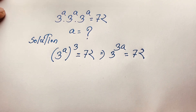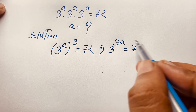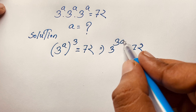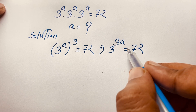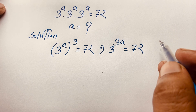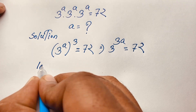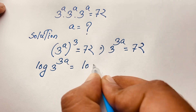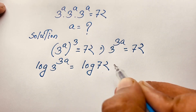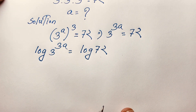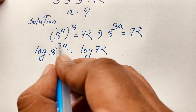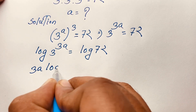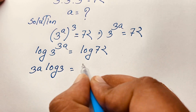Now, here we have 3 to the power 3a on one side, but 72 on the other. To find the value of a in this exponential expression, I apply natural log to both sides. So, natural log of 3 to the power 3a is equal to log 72. According to natural log rules, the exponent moves to the front, so it becomes 3a log 3 is equal to log 72.